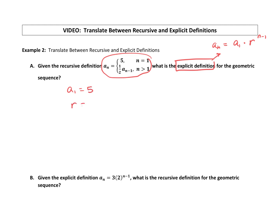The common ratio comes from the second line. You take your a sub n minus 1, your previous term, and you multiply it by the common ratio. We're multiplying it by 1 half, so our common ratio is 1 half.